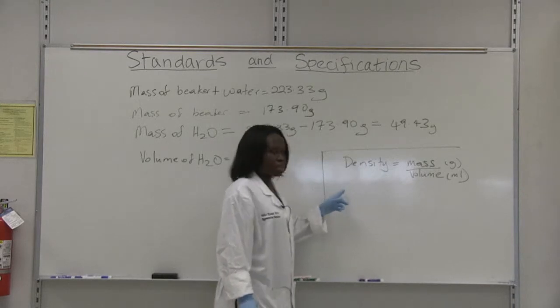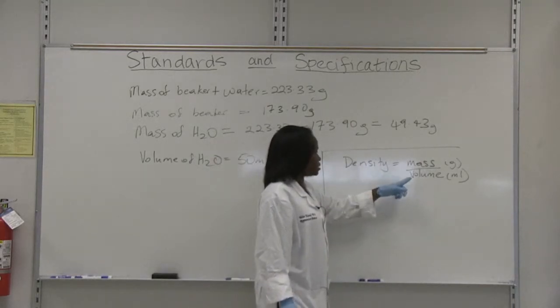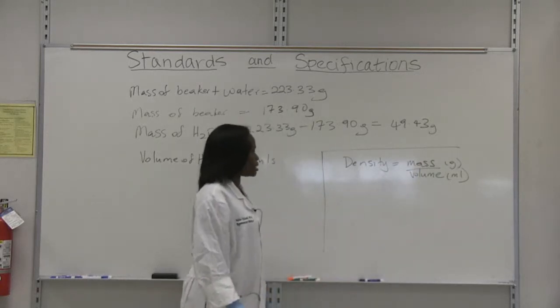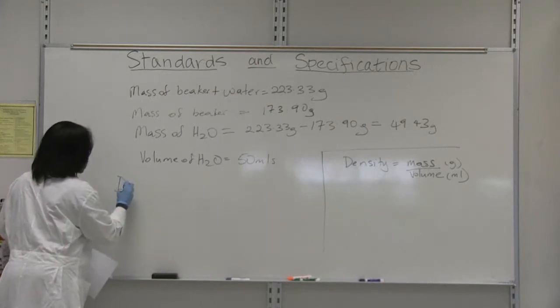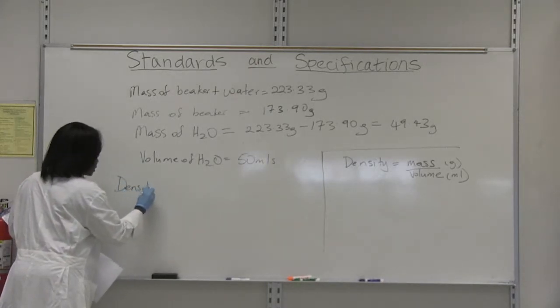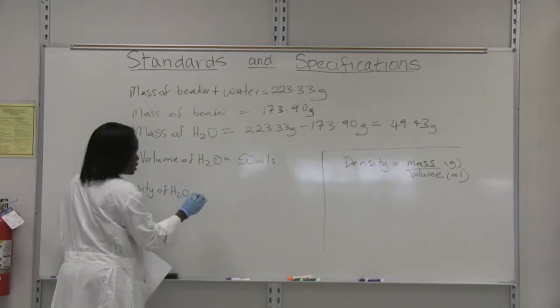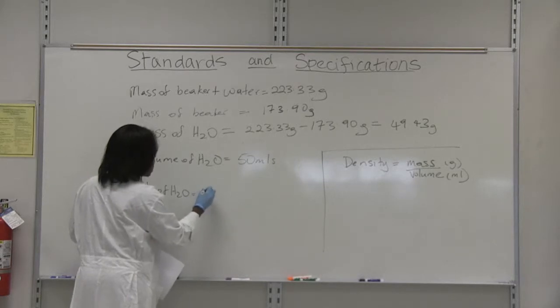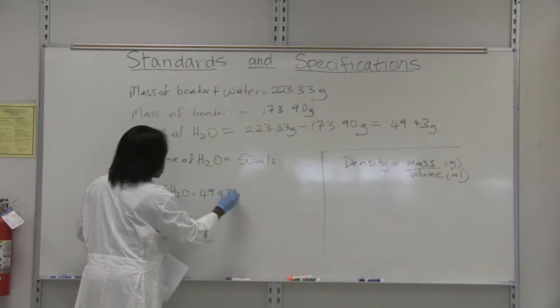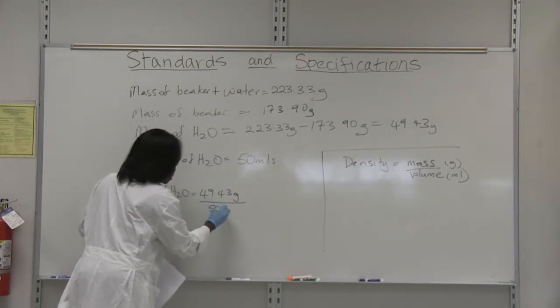So this is the equation that you have seen already. Density is equal to mass in grams over volume in mils. So in our case, the density of water is equal to the mass of water, which is 49.43, over 50 mils.